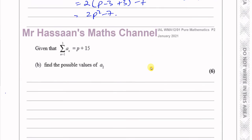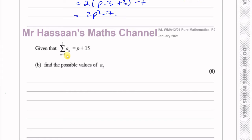Then part b says: given that the sum from n equals 1 to 3 of a(n) is equal to p plus 15, find the possible values of a2. A lot of students get confused by this notation — they're used to having the formula on one side of the equal sign.